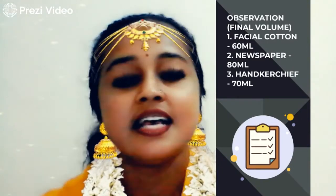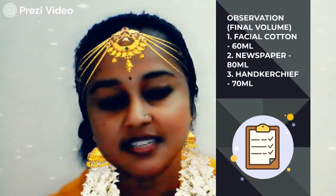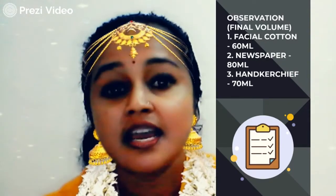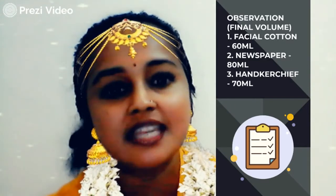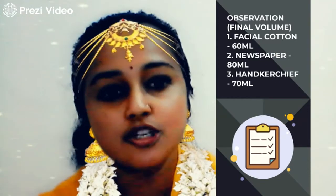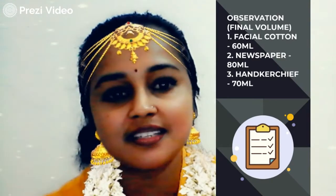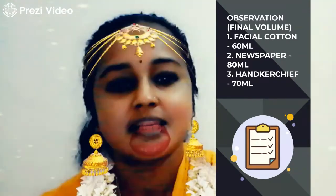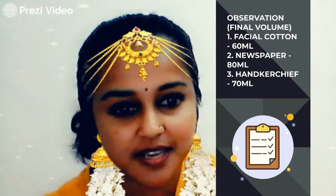This is the observation — the record of what they found. The final volume in each measuring cylinder: the one with facial cotton is 60 ml, newspaper is 80 ml, and handkerchief is 70 ml. These are the final volumes.